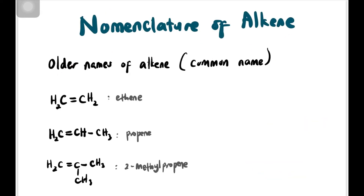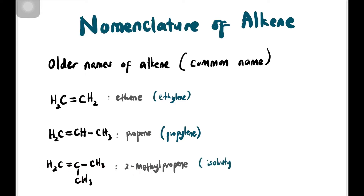Now, 3.2 — nomenclature of alkene. Alkene ni ada older names ya, nama lama dia, nama tradisional dia, ataupun common name dia. Contohnya kalau ethene tadi, dia ada nama lain dia, yaitu ethylene. Kalau propene, boleh dipanggil sebagai propylene. Dan kalau 2-methylpropene, ini antara contoh ya, kita boleh dipanggil sebagai isobutylene.